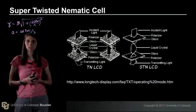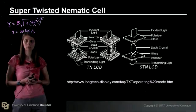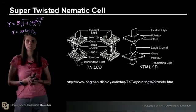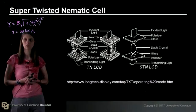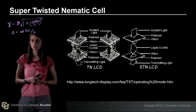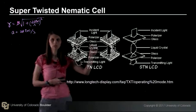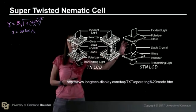So this slide is showing you the difference between the twisted nematic cell and the super-twisted nematic cell. In the twisted nematic cell, the light undergoes a quarter turn before it comes out. But in the super-twisted nematic cell, we have more rotation. In order to get more rotation, we essentially need to have a thicker cell.